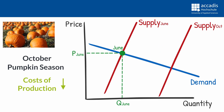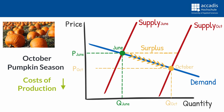To simplify things, we exclude any sort of Halloween demand effects here in October - in later videos we will come back to such multiple changes. So at the June price, we now have a surplus of pumpkins. Suppliers will supply a higher quantity than demanders are willing to buy. Hence the price decreases and quantity demanded increases until demand equals supply again. In the end, we see that pumpkin prices have decreased and quantity has increased, which is something you can verify each autumn in your local German supermarket - you are going to see more pumpkins than before at lower prices.